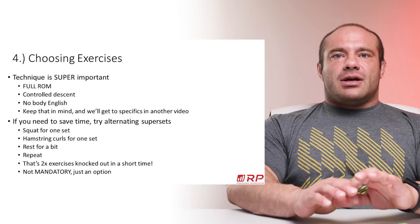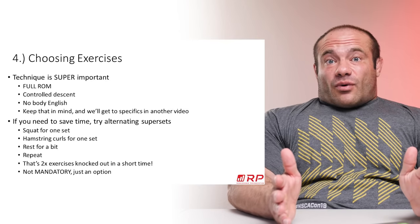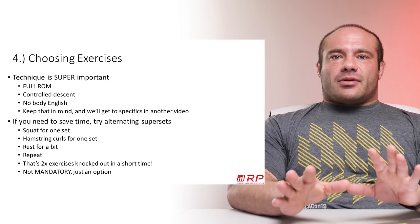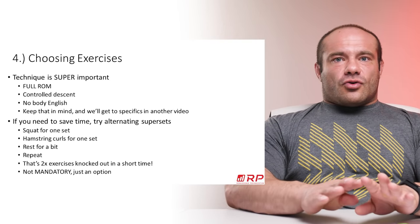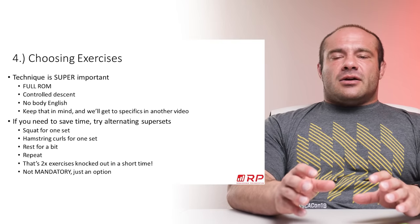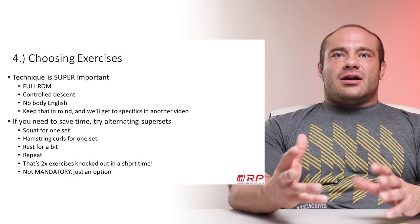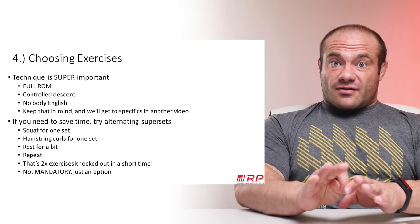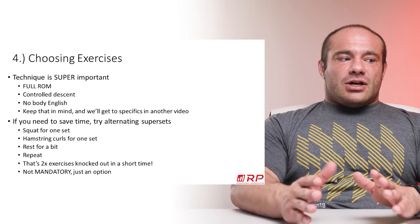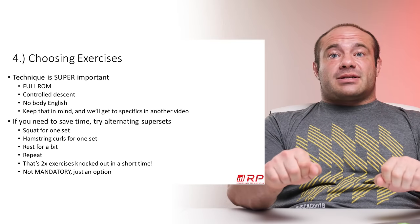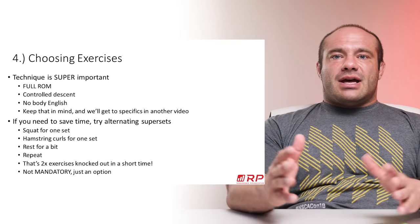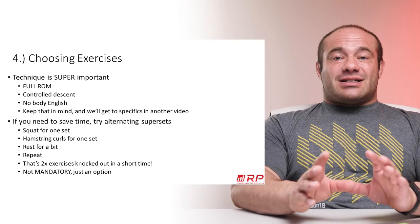If you want to save extra time and don't have a full hour, consider alternating supersets. Here's how: do squats for one set, then go right to the hamstring curl machine for a set. The squat doesn't really train your hamstrings, so they'll be fresh. You get a productive set of squats, then a productive set of hamstrings. As soon as you're done, rest for maybe 30 seconds to a minute, get your breathing back, then hit it again. You can do bicep curls supersetted to tricep extensions, or pushups supersetted to barbell rows. One muscle rests while the other goes, then both rest as you catch your breath. This gets tons of work done in a short time.